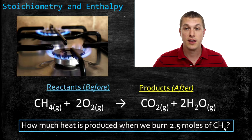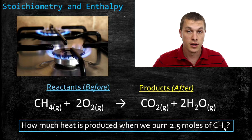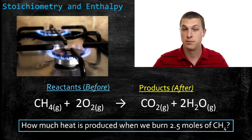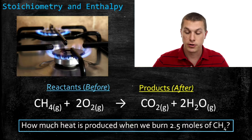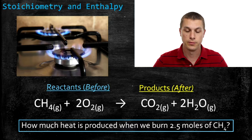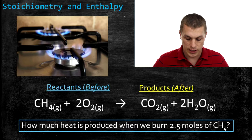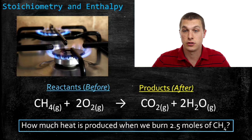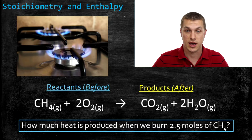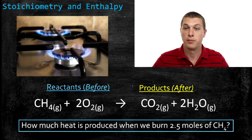One example we could think of is going to your stove. If you have a gas burner, your gas burners burn natural gas — that's methane. Methane is combined with oxygen and it produces CO2 and water. We also know it produces heat — that's how we cook our food. And you might want to know how much heat can I produce if I burn a certain quantity of natural gas, or how much natural gas do I need to burn so I can cook my food.